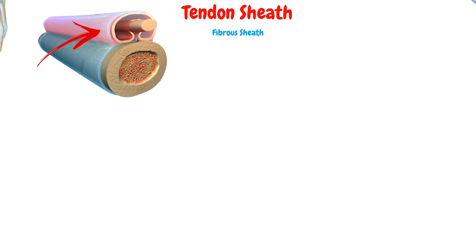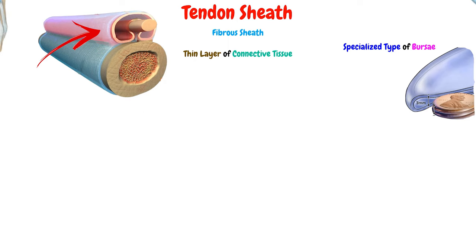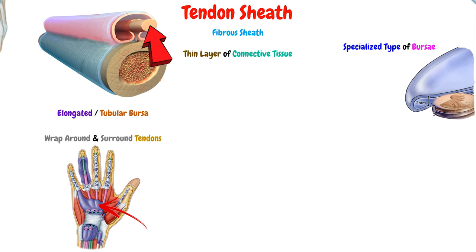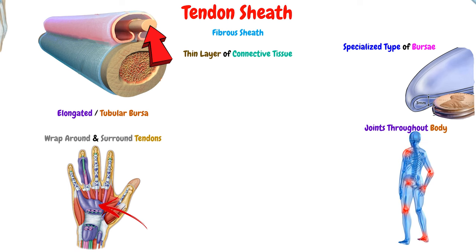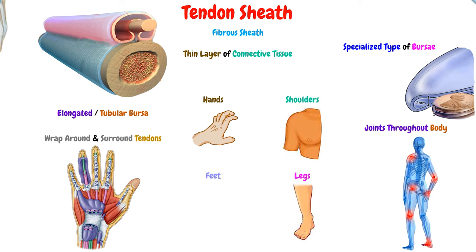The tendon sheath, sometimes called the fibrous sheath, is a thin layer of connective tissue which is in fact a specialized type of bursa — considered an elongated or tubular bursa. This tendon sheath wraps around and surrounds the tendons of the muscles, and it is found in joints throughout the body, for example in the hands, shoulders, legs, and feet.